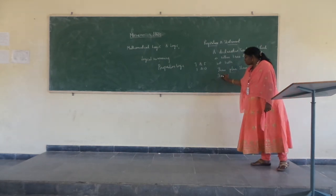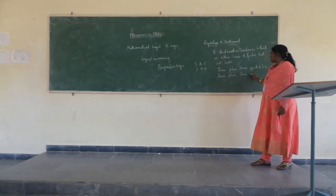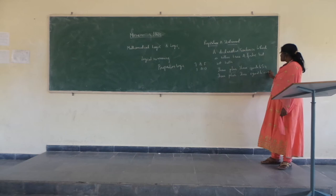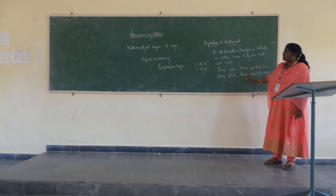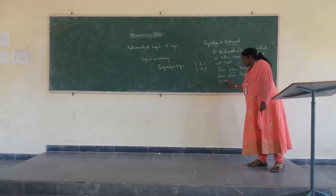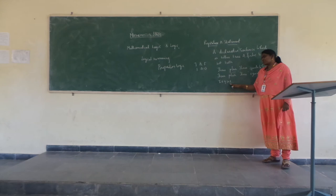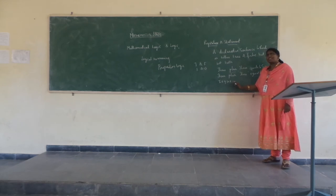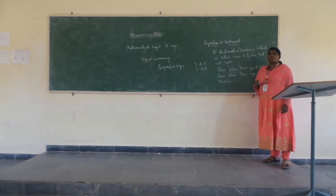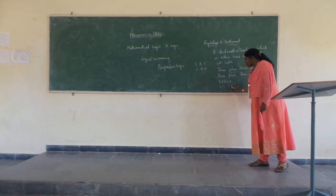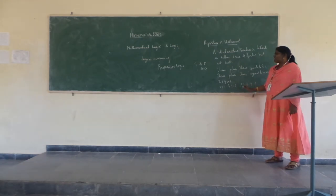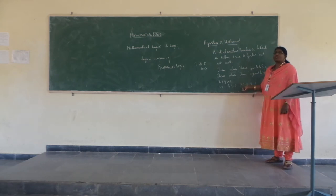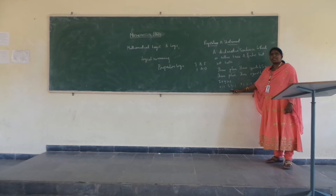For example, '3 plus 3 equals 6' is a statement because it is true. Similarly, '3 plus 3 equals 7' is also a statement because it is false. Both are declarative sentences with only one possible truth value. However, 'x plus y is greater than 1' is a declarative sentence but not a statement, because it can be both true and false depending on the values of x and y — for example, x=1, y=2 makes it true, while x=-3, y=1 makes it false.